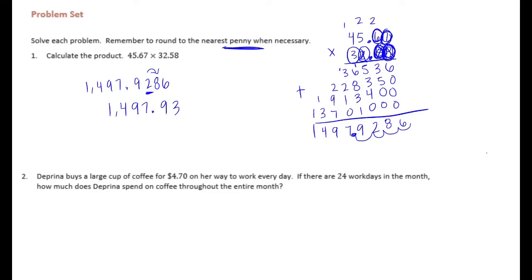Number 2. Duprina buys a large cup of coffee for $4.70 on her way to work every day. If there are 24 work days in a month, how much did Duprina spend on coffee throughout the entire month? So $4.70 every day for 24 days. I'm going to leave the zero off.